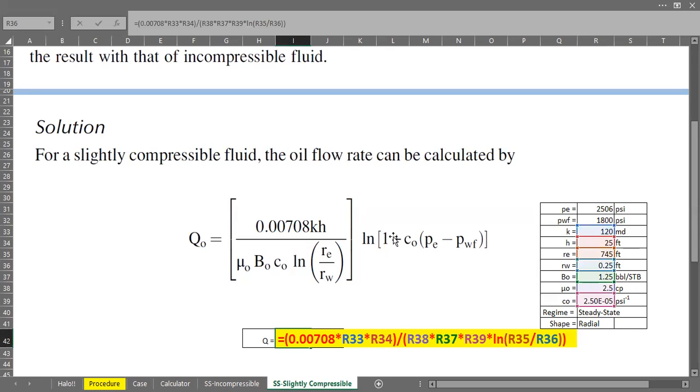we will calculate this last term. So multiply logarithmic natural open parenthesis. One plus oil compressibility multiplied by Pe external pressure minus flowing bottom hole pressure. Close and close again. All right. So it's very easy and straightforward.